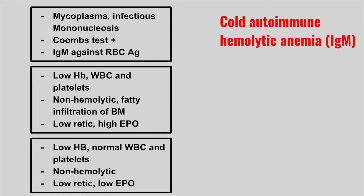The next patient is going to have a low hemoglobin, low white blood cells, and low platelets — it's non-hemolytic, meaning the reticulocyte count is going to be low — and there's a fatty infiltration of the bone marrow with a high EPO. This is aplastic anemia.